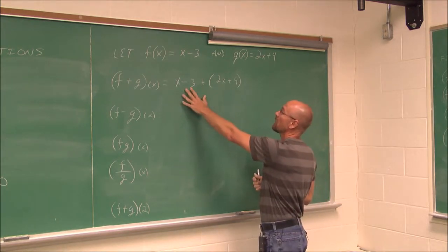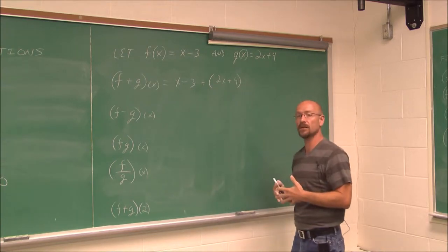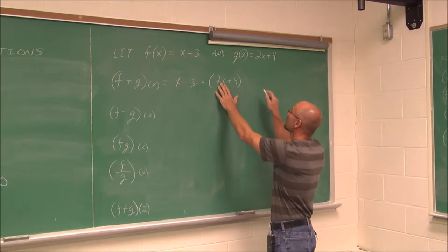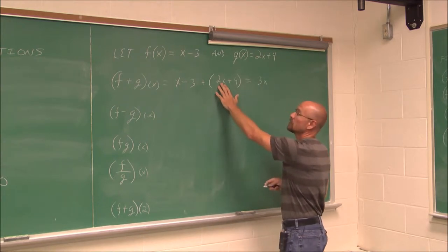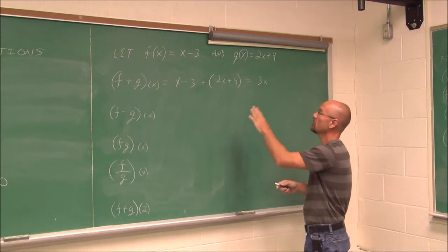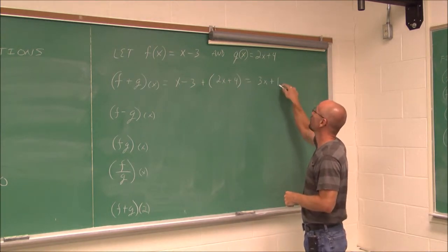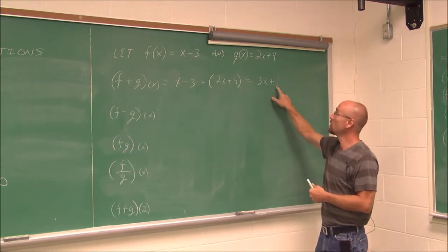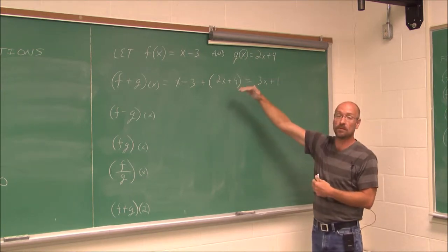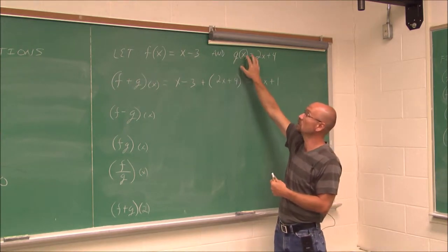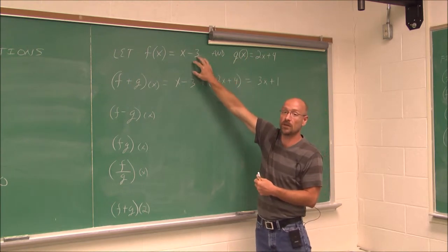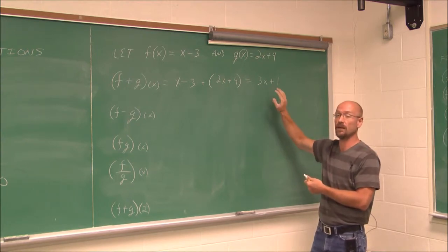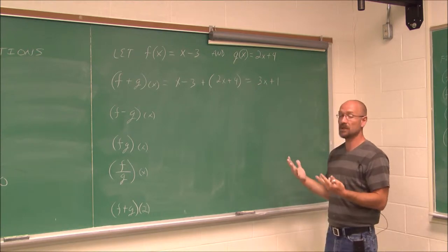So if we look at this: x minus 3 plus 2x plus 4. To add the functions, I combine like terms. We have x plus 2x, which gives me 3x. We have negative 3 plus positive 4, which gives me positive 1. So if I add these two functions together, I get a new function: 3x plus 1. If I wanted to evaluate the sum of these functions for some value, I can just plug it into this one combined function instead of plugging into two separate functions and adding.